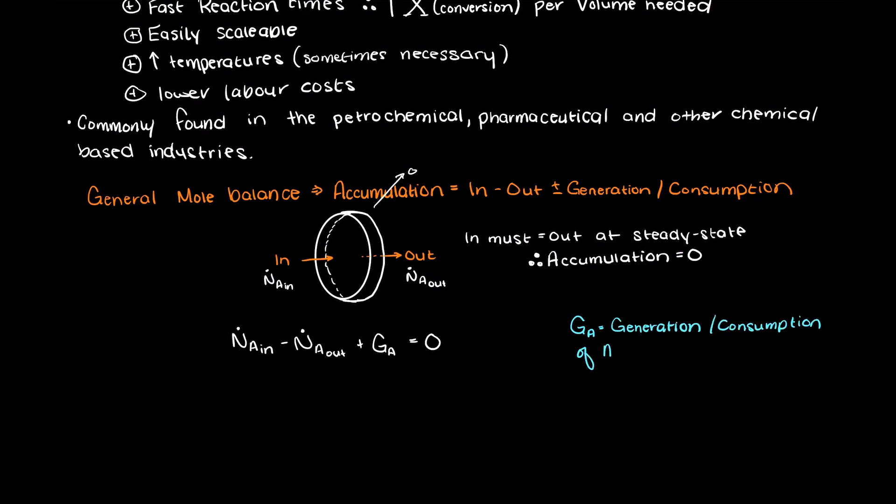So, this term here could be the generation of A or the consumption of A, or both, depending on what part component A plays in the reaction. Just note that GA here stands for the generation or consumption of component A, therefore it is equal to the rate of formation, in the terms of generation, or rate of consumption, in the terms of consumption, times the volume within our reactor.